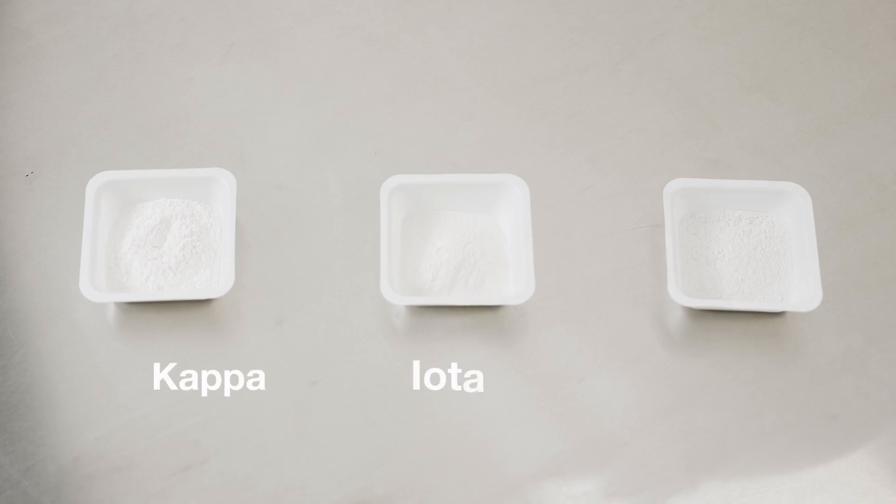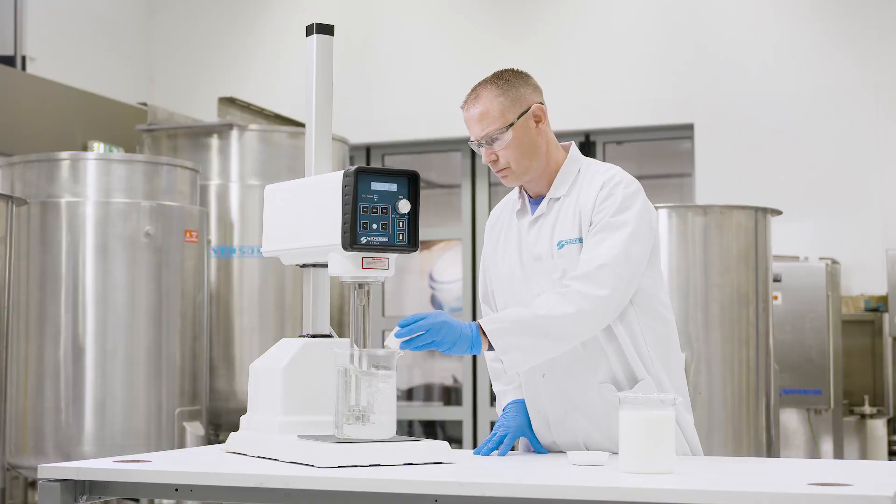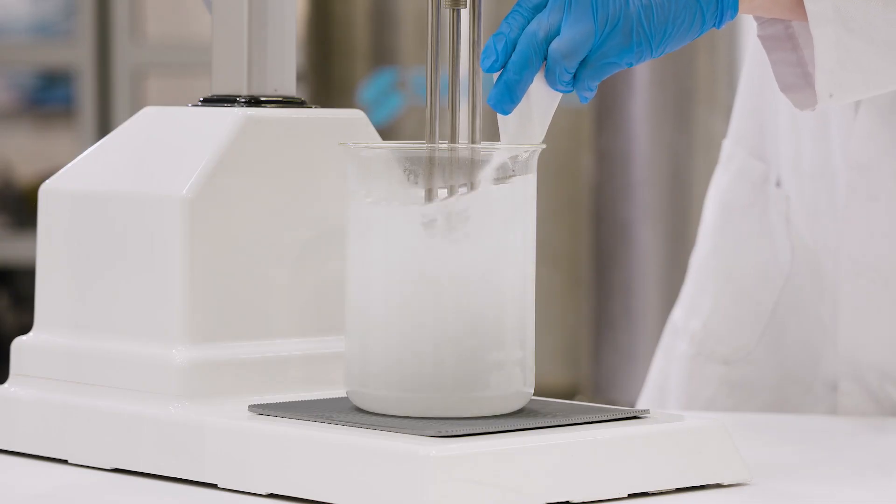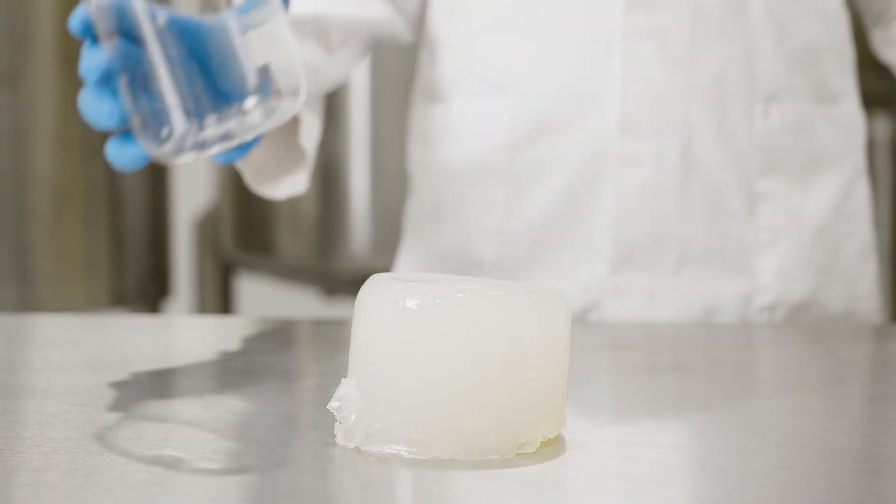kappa, iota, and lambda. Kappa carrageenan is only soluble in hot water and in the presence of potassium ions. It forms a rigid thermoreversible gel which softens when heated.